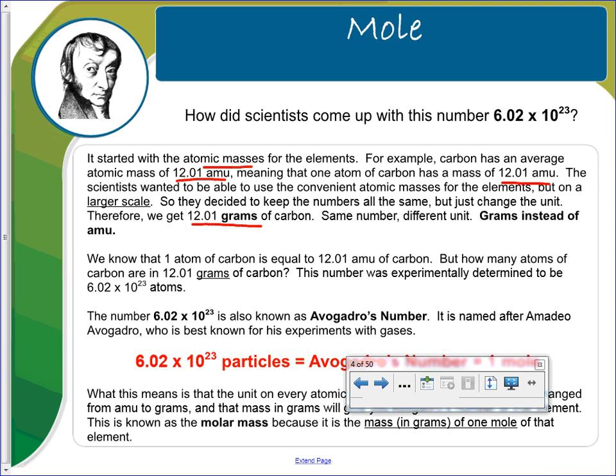We know that one atom of carbon is equal to 12.01 amu of carbon, but how many atoms of carbon are in 12.01 grams? This is the number that's been experimentally determined to be 6.02 times 10 to the 23rd atoms. This is also known as Avogadro's number. It's named after Amadio Avogadro, who is best known for his experiments with gases.